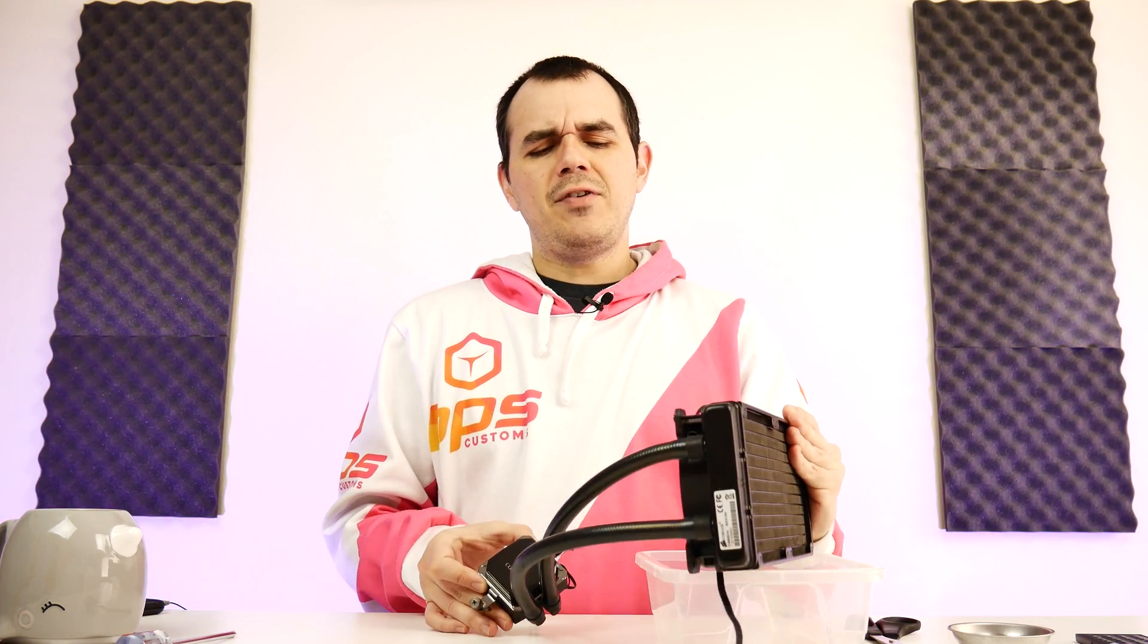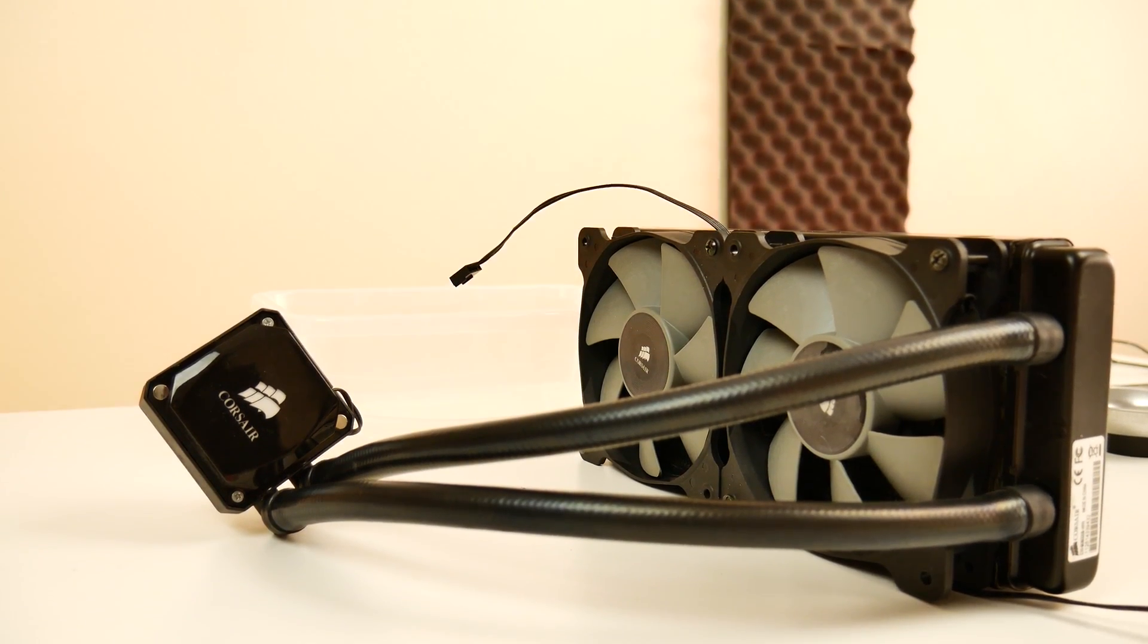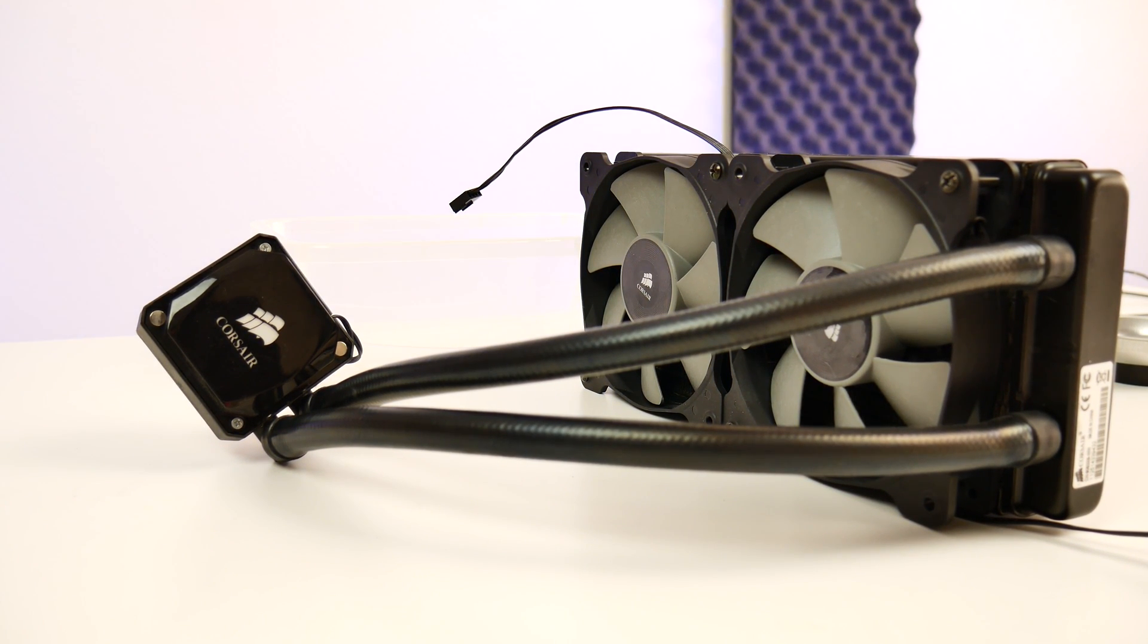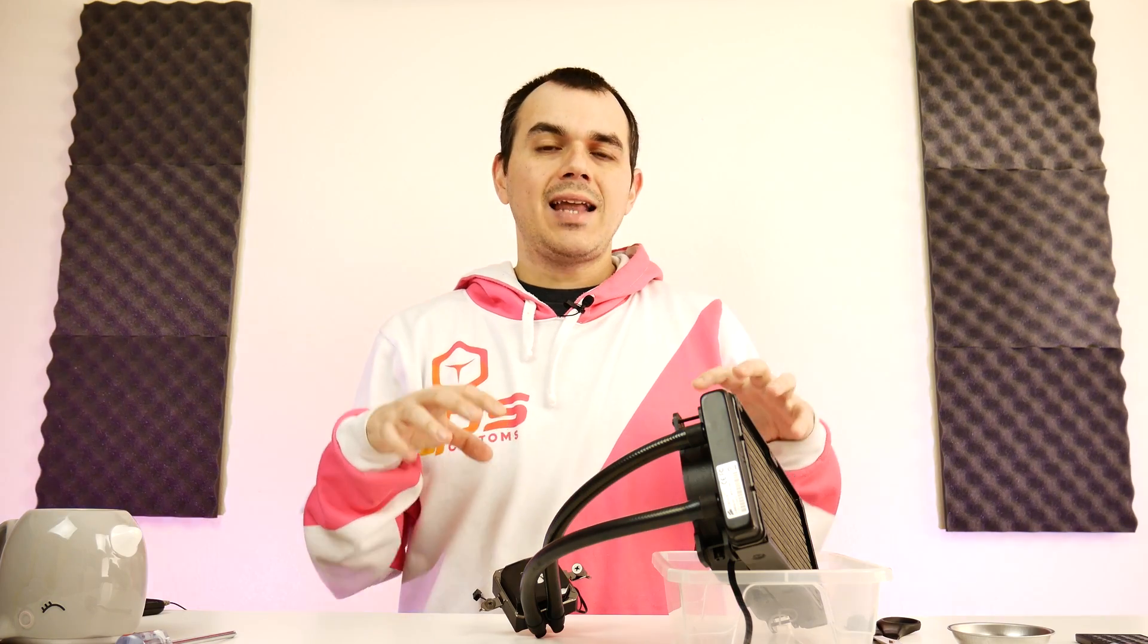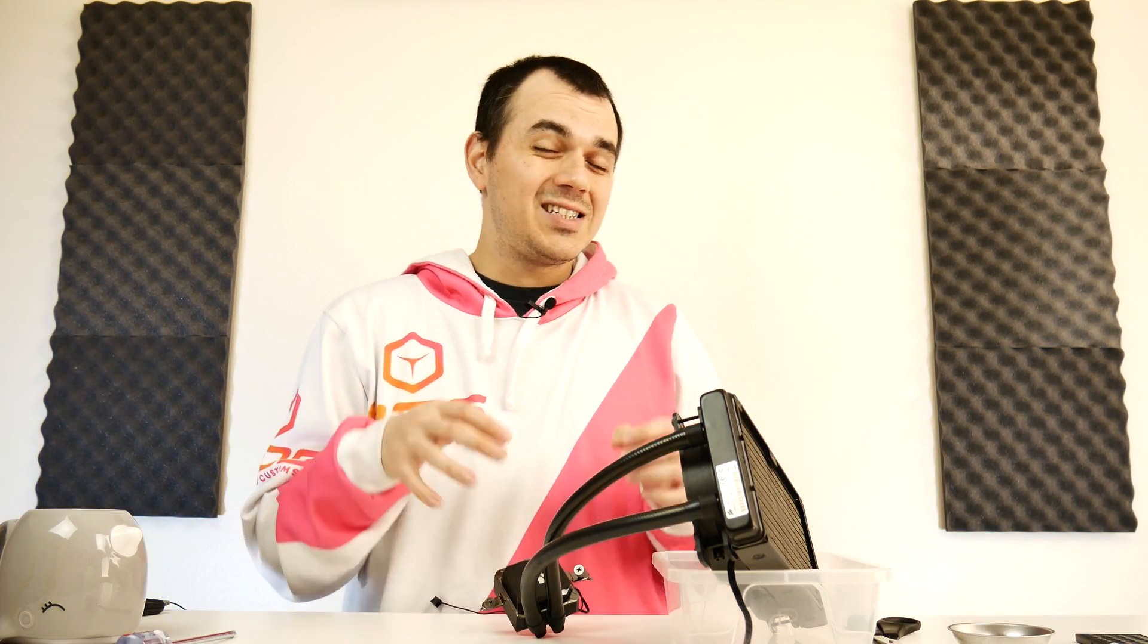But right around the time that video's testing was completed, this heatsink started exhibiting really odd behaviors. I was noticing sudden spikes of over 10 degrees Celsius under load. It was taking forever for this thing to bring temperatures back down. So I figured it's probably had a good enough run anyway. So we're going to spend this time right now to tear this thing down, take a look at the impeller, take a look at some of the possible points of failure on an all-in-one this old, and then splay open some of the tubing so we can take a look at what the inside of it looks like.